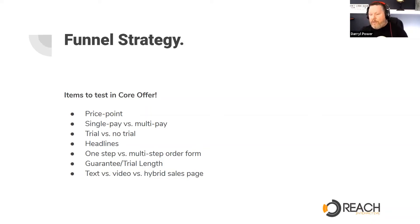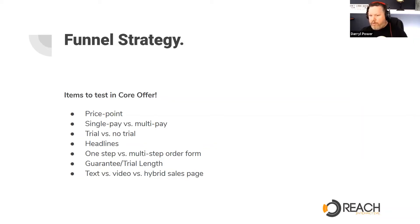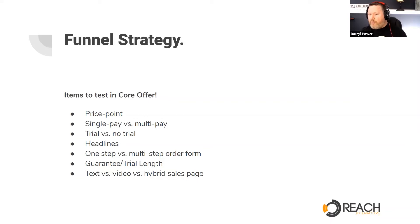Other things you can test for your core product are text versus a video sales letter, or even having a hybrid sales page — basically a combination of having a video and text content in order to sell your product. Those are some of the things you should look at when trying to sell your core offer within your funnel.